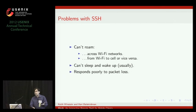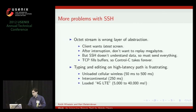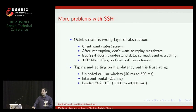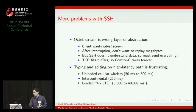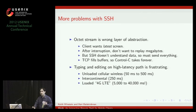And SSH, because it runs over TCP, responds poorly to packet loss. So if you're on one of these terrible networks, like on Amtrak, you really can't expect to use SSH. We argue that the root cause of this is that this octet stream, which SSH sends, is really the wrong layer of abstraction for this kind of application. If you're the client, you want to see the latest screen from the application. What is the current contents of the screen?